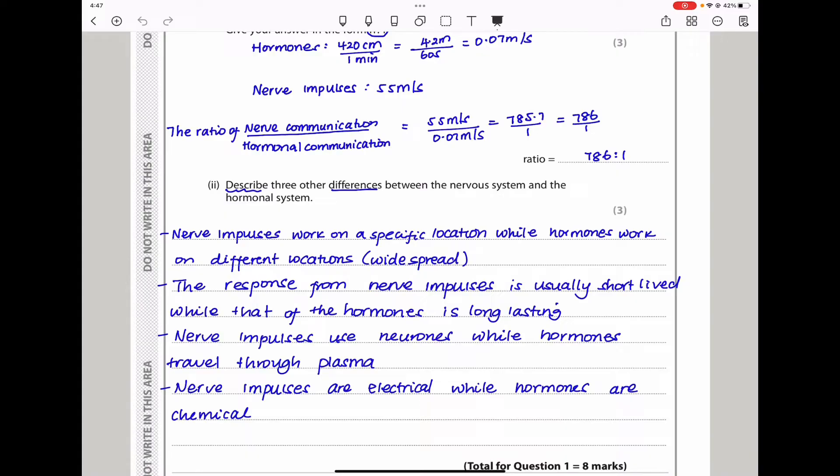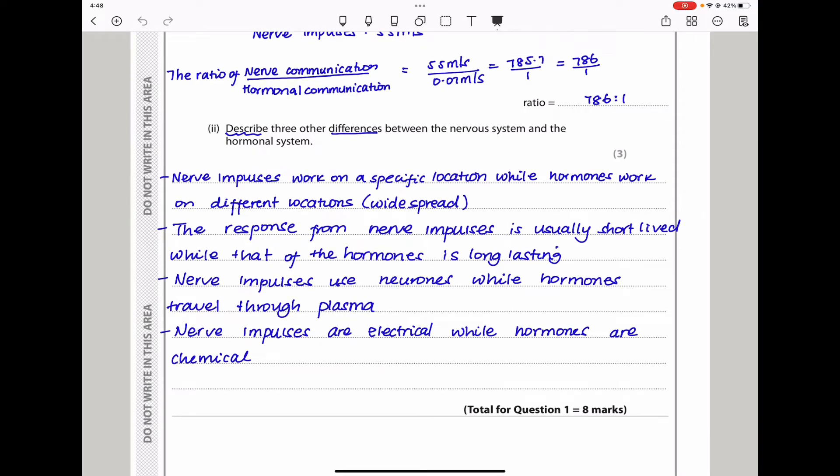Next, nerve impulses use neurons as the modes of communication or transportation, while hormones travel through plasma, through the blood. Nerve impulses are electrical, while hormones are chemical. So these four are distinguishing, in addition to the one we saw about speed. This brings us to the end of question one.